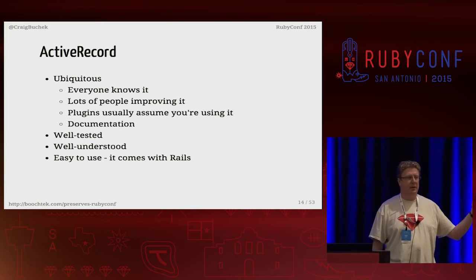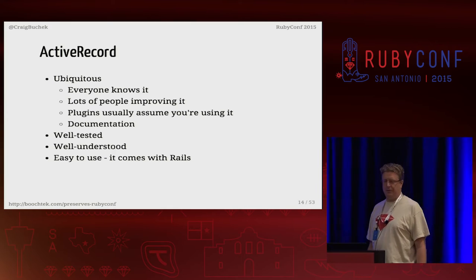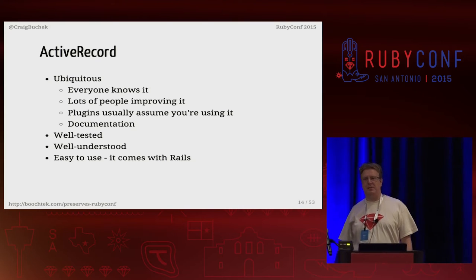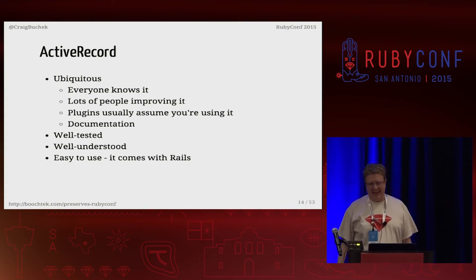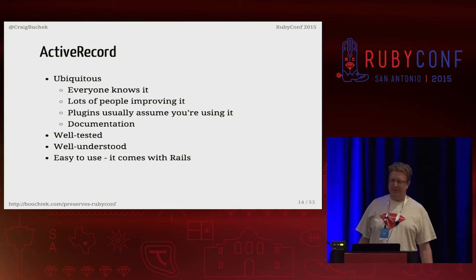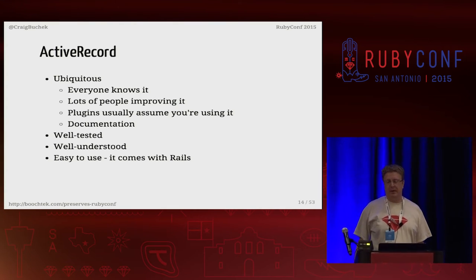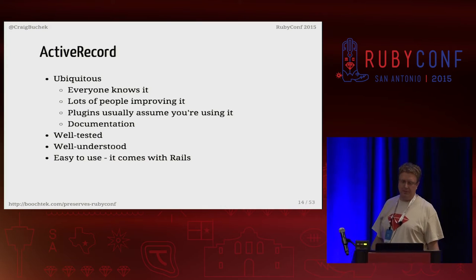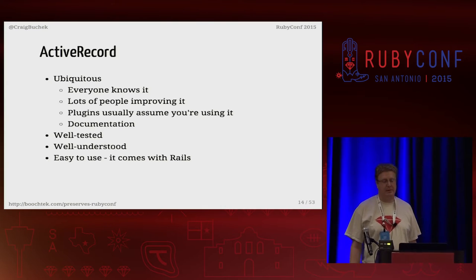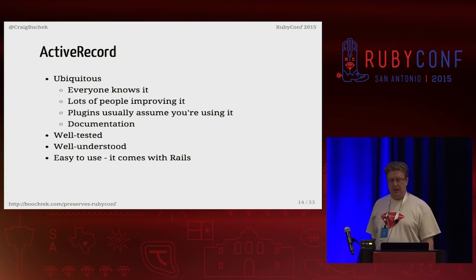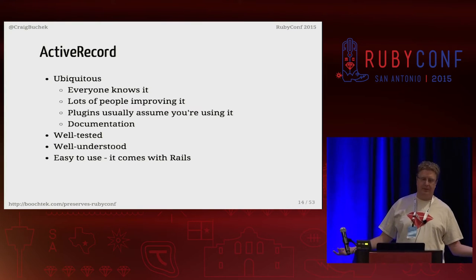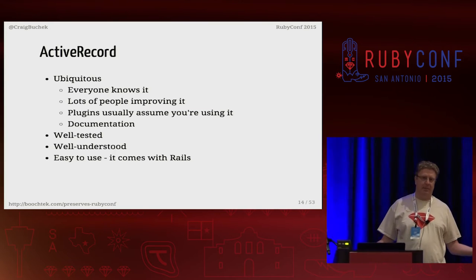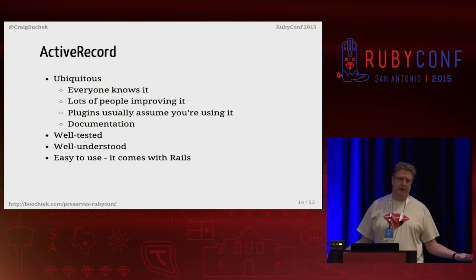Who loves ActiveRecord? About a dozen or so. Who hates ActiveRecord? About a dozen or so. I'm mostly in the hate camp, but we have to deal with it. Who's had to type raw SQL in an ActiveRecord class? Yeah, a couple dozen. So ActiveRecord is a leaky abstraction — SQL leaks up into upper layers. But ActiveRecord is the 800-pound gorilla: every Rubyist knows it, it's well-tested, and it's just easy to start using. You don't even have to think about it if you're using Rails.